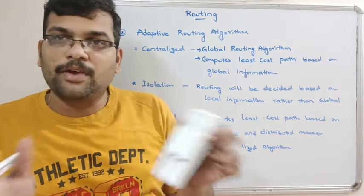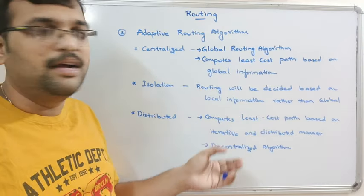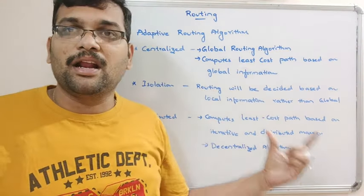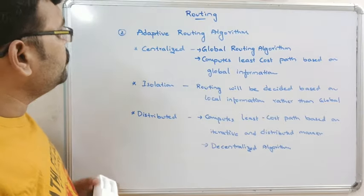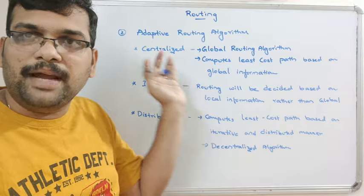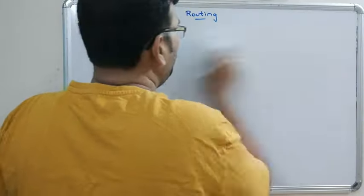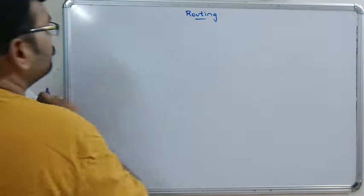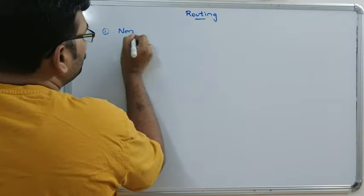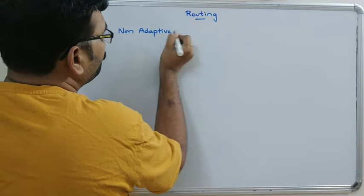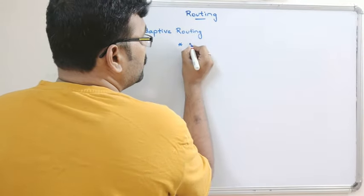Don't worry if you have some doubts about these classifications — whenever we go through the example algorithms, you will understand all these points: what is meant by global information, what is meant by iterative and distributed manner, and how they are achieved. Now, let's look at what algorithms fall under the non-adaptive routing category.